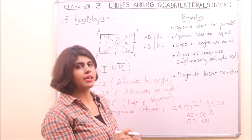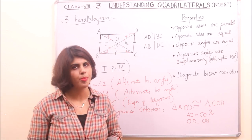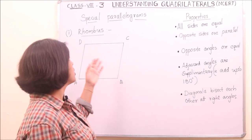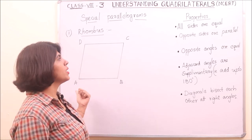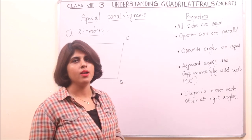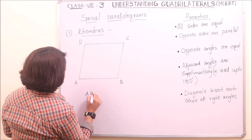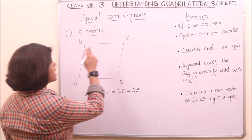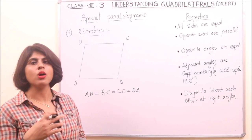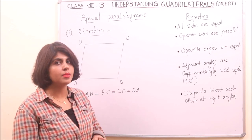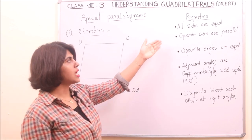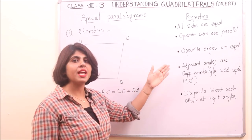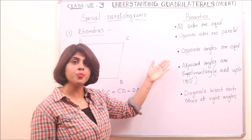So these are the properties of parallelogram. Now we will discuss the special types of parallelograms. The first one is rhombus. Rhombus is a parallelogram in which all sides are equal, so AB equals BC equals CD equals DA. Since rhombus is a parallelogram, all properties of a parallelogram are also applicable to a rhombus.